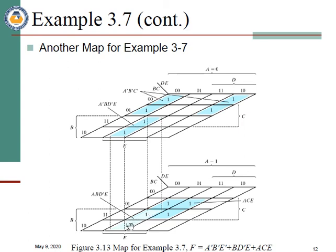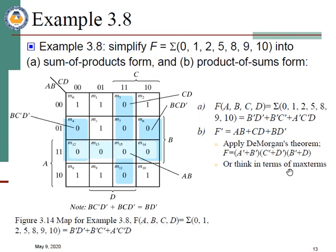The blocks are connected to the adjacent variable map — connected across the two boxes — creating a combined group. This was the concept. Here is another example: you can do this simplification yourself. We can solve K-maps in two ways: sum of products and product of sums.